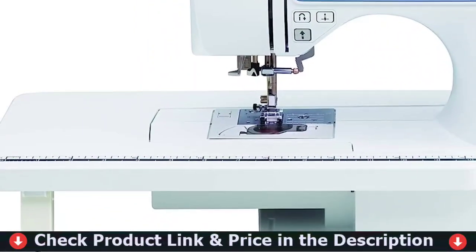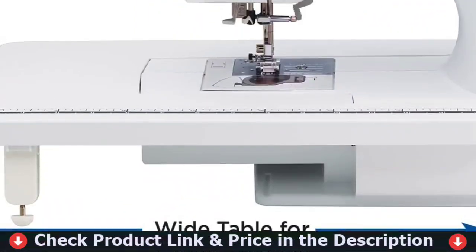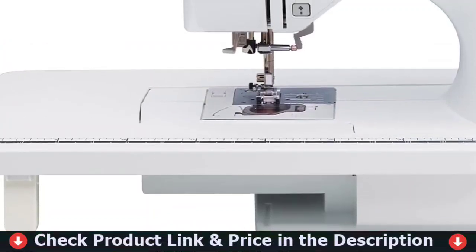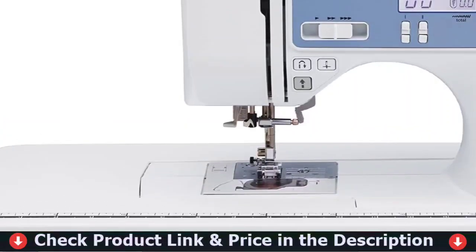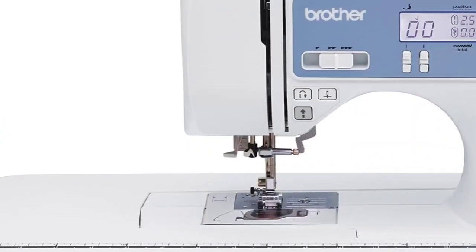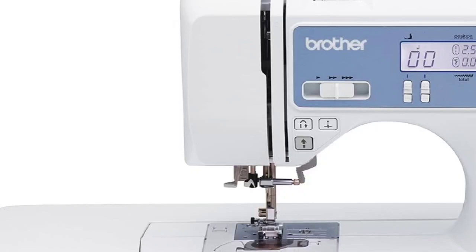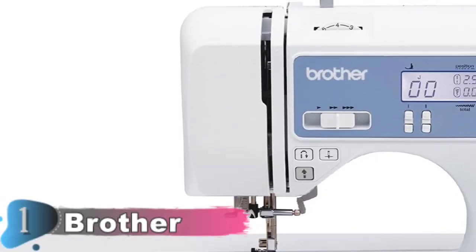The Brother Fast Needle Threading System takes care of threading the needle for you in a convenient, jam-resistant drop-in top bobbin. Included with the XR9550 is a protective hardcover, wide table, 8 sewing and quilting feet, instructional DVD and more.